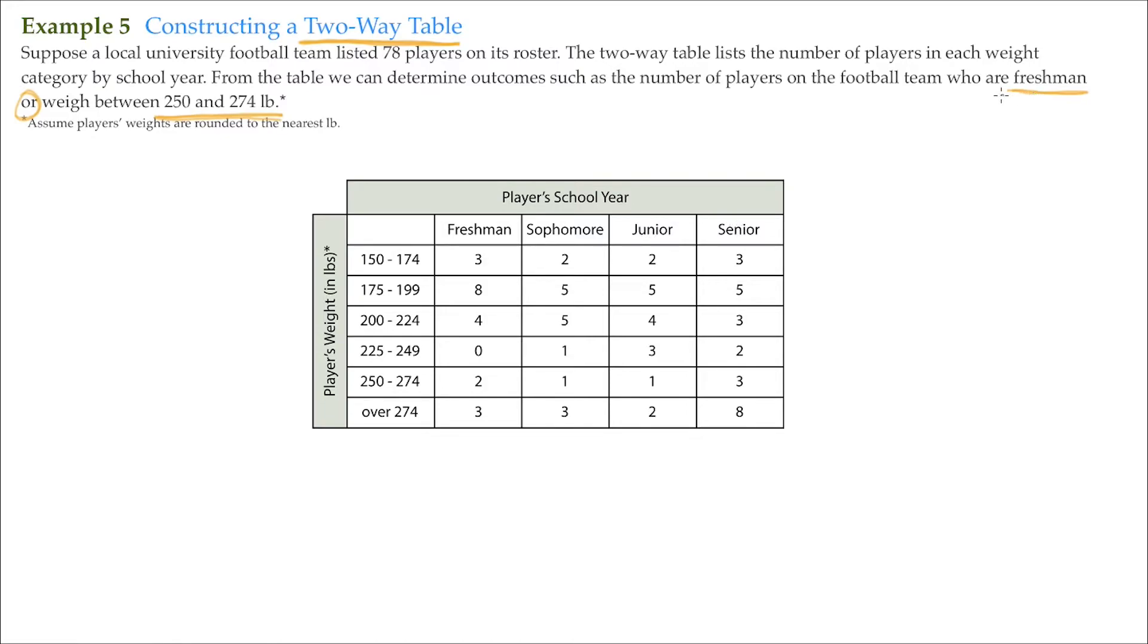So if we want to know how many freshmen there are, well here's the freshmen here. We could simply just tally them all up. We have 3 that weigh between 150 and 174, 8 between 175 and 199. If we go ahead and tally them all up, we've got 3, 8, 4, 2, and 3, and that comes out to be 20. So I'm just going to pen it in right here.